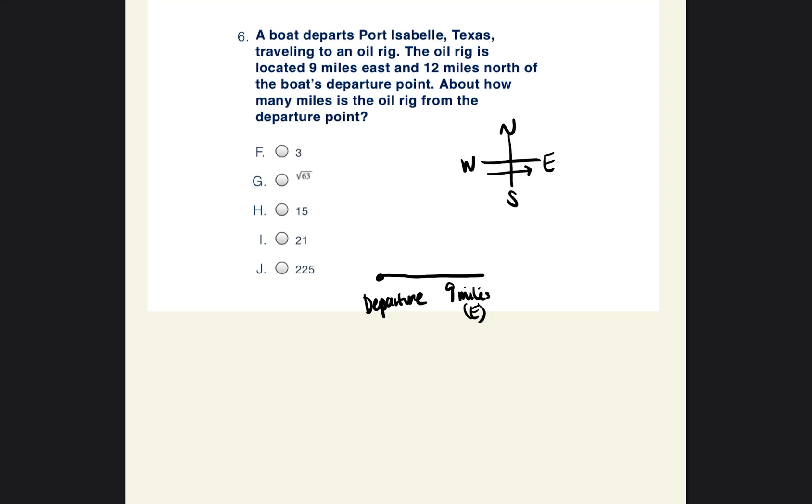Because you see how it's going that way is east. And then it says 12 miles north. So then from this point it's going to go up 12 miles. And again, you go up to go north. So now it's asking the distance between the departure point and the end point, which is at the oil rig. So here's the oil rig. So if you look at that, we just drew a right triangle.